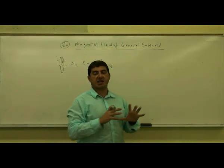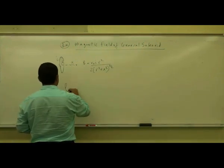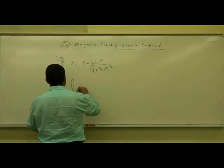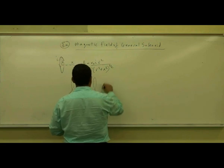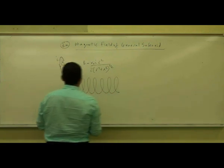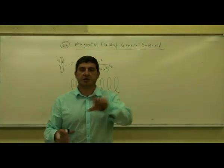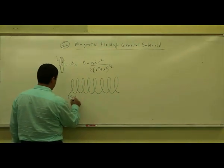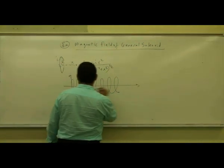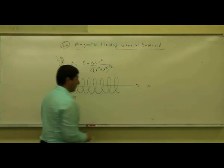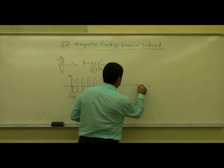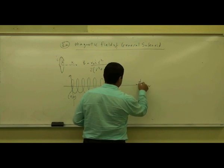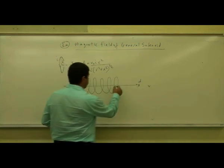Let's generalize that to a solenoid. A solenoid is pretty much any current-carrying wire that has a certain length and a certain radius. We'll place the origin at the left side with the x and y-axis here, and we want to find the B-field at a distance D away from the front edge.